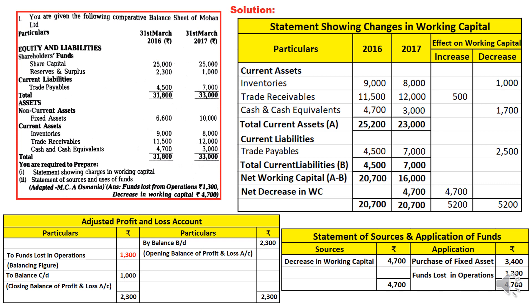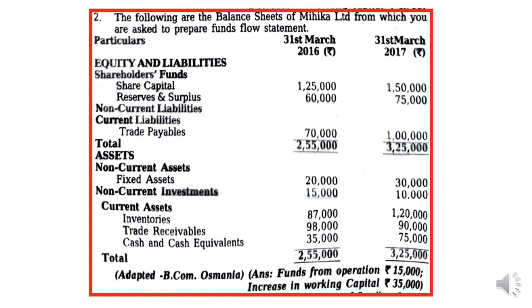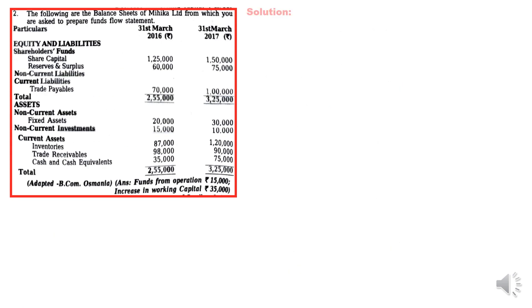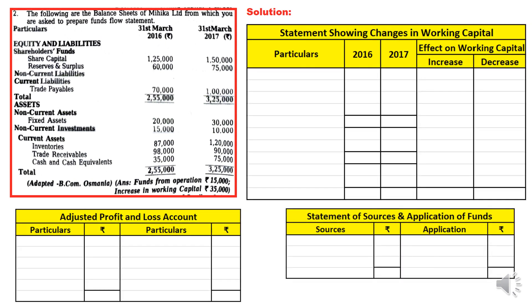I will now take up another question — two more questions with a little more items. The second question is similarly straightforward. I will directly take up the solution and show how to solve it. The same way, I have prepared all three statements: statement showing changes in working capital, P&L adjustment account, and statement of sources and application. The same procedure will be followed, so please do follow along. Attempting the problem simultaneously will make it easier for you to reproduce in the examination.